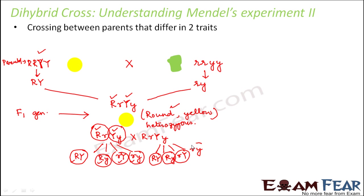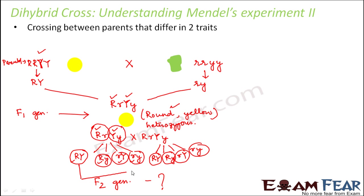Using these gametes, what we will do is find out the F2 generation. Now here, since the number of gametes is more, finding out the F2 generation is going to be a little tedious — this can combine with this, and so on for all of them. That is going to be a little cumbersome. That is why we will see how the Punnett square becomes so easy in such cases. For the monohybrid cross I already told you how we design a Punnett square. For a Punnett square, all we need to know is the gametes. If we know both the male and female gametes, it is very easy to design a Punnett square.